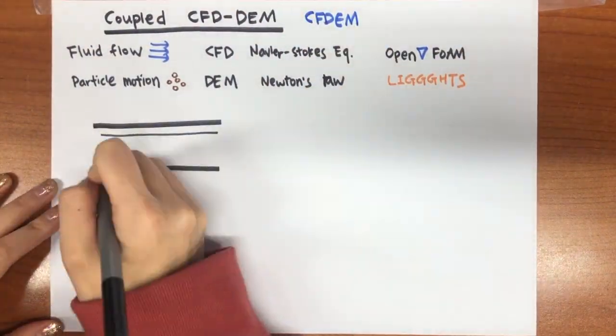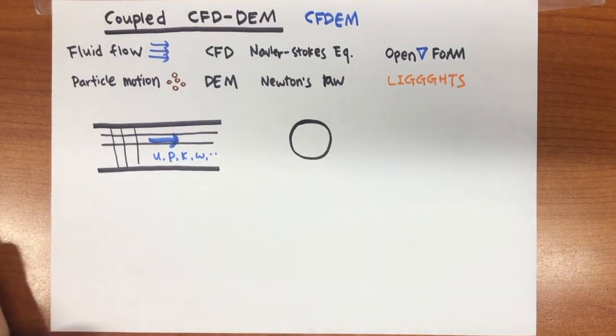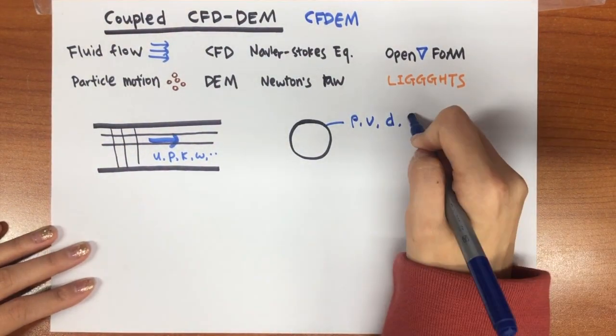In CFD, the boundary and initial conditions can be controlled, and in DEM, the particle physical properties and interparticle properties can be controlled. By using the bonding model, cemented materials like calcite can be described.